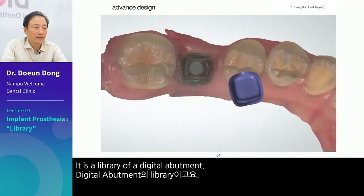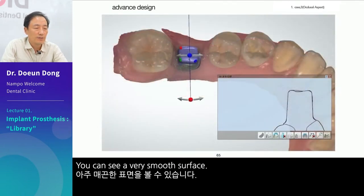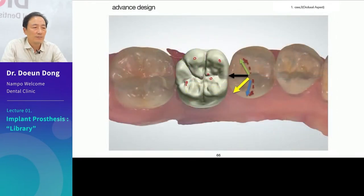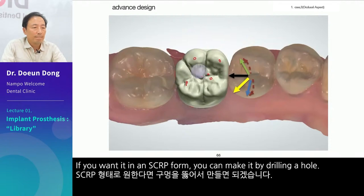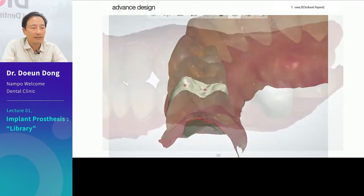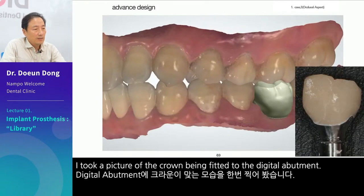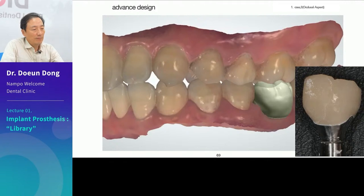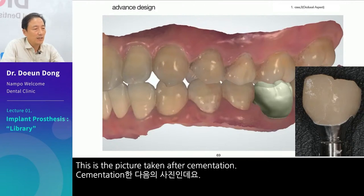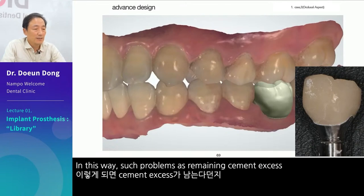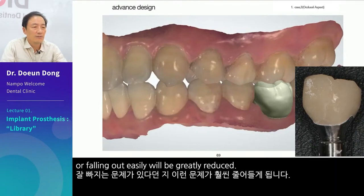It is a library of digital abutments — you can see a very smooth surface. When merged, there is almost no gap. The crown can be designed and made. If you want it in a SCRP form, you can make it by drilling a hole. We form an occlusal point. This is the crown being fitted to the digital abutment. This is the picture taken after cementation — it fits perfectly with no gaps. Such problems as remaining cement excess or falling out easily will be greatly reduced.